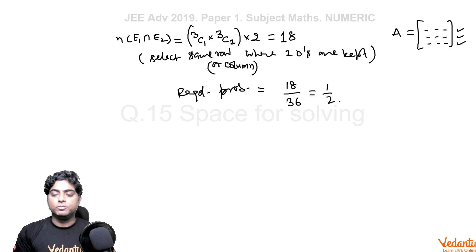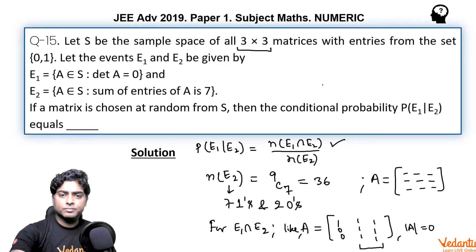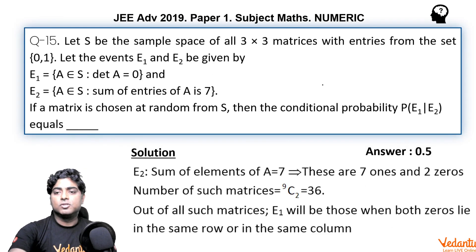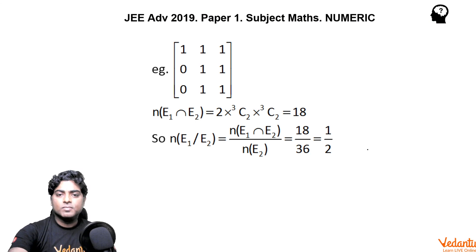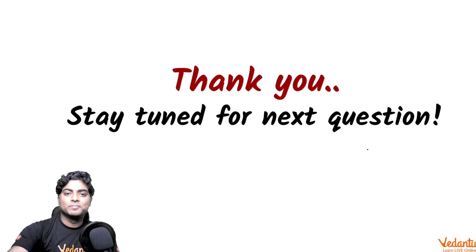Meaning the required probability in that way would be 18 upon 36. The answer is 1 by 2. So the answer to this question must be 1 by 2, 0.5 as you can see. So you can go through the type solution also. I hope you understood it. Thank you and stay tuned for the next question.